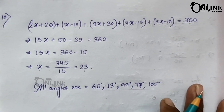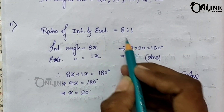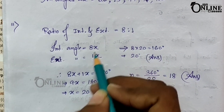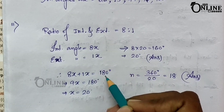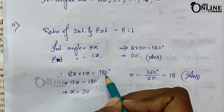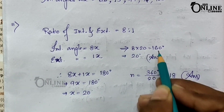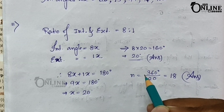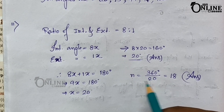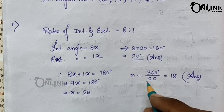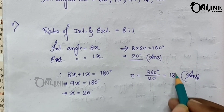Problem number eleven: the ratio between the interior and exterior angles of a regular polygon is 8:1. Let the interior angle be 8x and the exterior angle be x. Since interior + exterior = 180°, we get 8x + x = 180°, so x = 20°. The interior angle is 8 × 20° = 160° and the exterior angle is 20°. The number of sides = 360° ÷ 20° = 18.